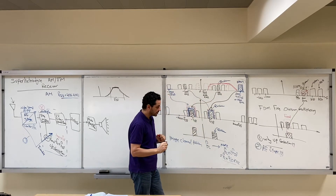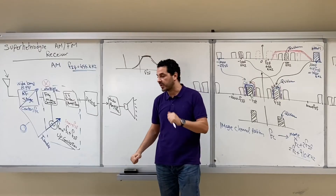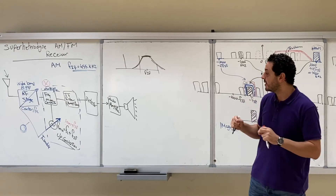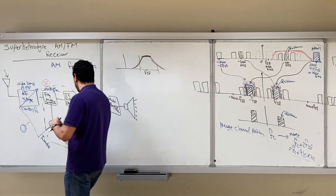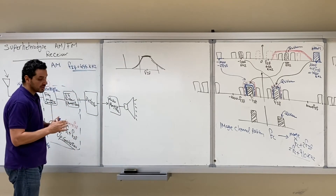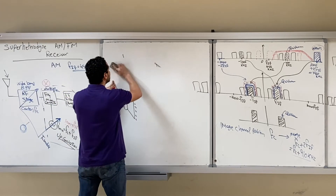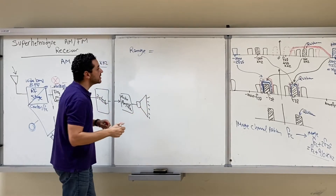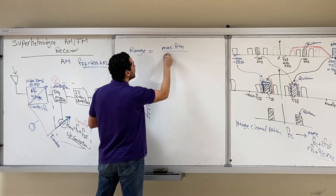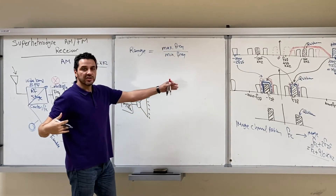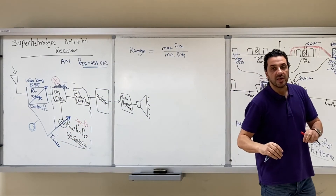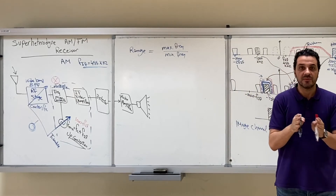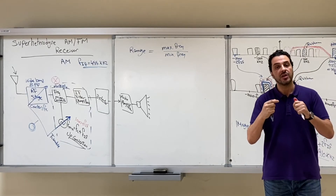The benefit of the RF stage is to remove the image channel and prevent two channels like the Quran and the News from appearing at the same IF location. This answers why we need the RF stage. Now, why do we use up conversion and not down conversion? The answer relates to the complexity and cost of designing a tunable oscillator, which depends on the tuning range — defined as the maximum frequency divided by the minimum frequency. A larger range makes the oscillator more complicated and expensive; a smaller range makes it easier and cheaper.